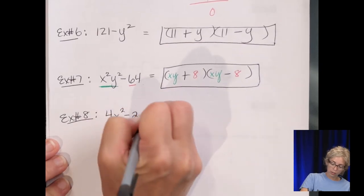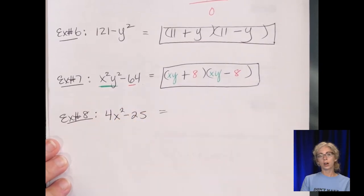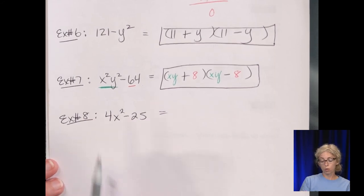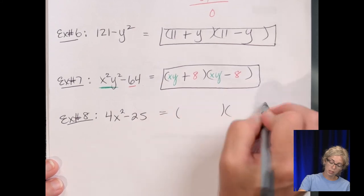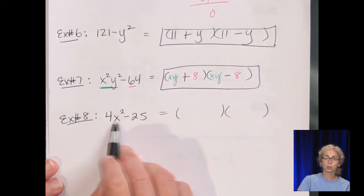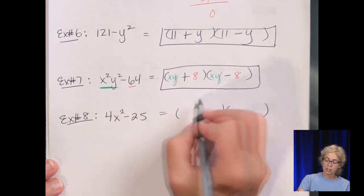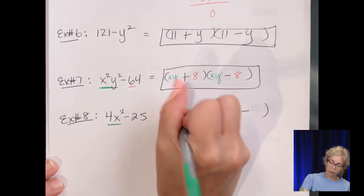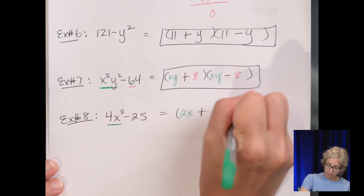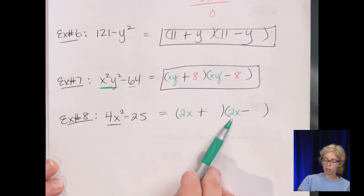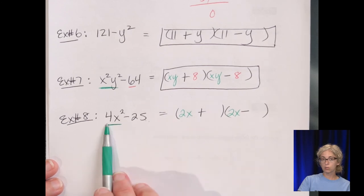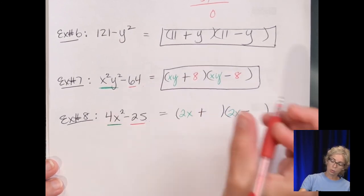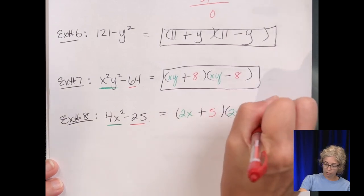Example 8: 4x² - 25. The GCF — is 25 divisible by 4? No. There's no variable in common either. Set up two parentheses with different signs. What multiplies to 4x²? That's 2x × 2x (since 2×2=4 and x×x=x²). To get 25, that's 5×5. So the answer is (2x + 5)(2x - 5).